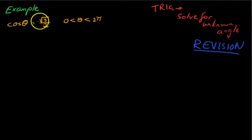So just jumping through this one really quickly, cos θ equals root 3 on 2, if 0 is less than θ, which is less than 2π. So in other words, we need to know what θ is. We know that it's between 0 and 2π, that's between 0 and 360 degrees.